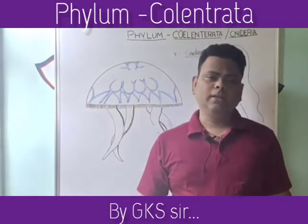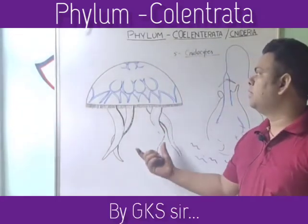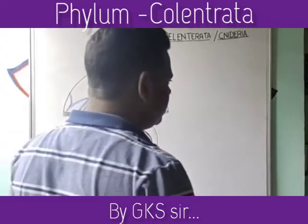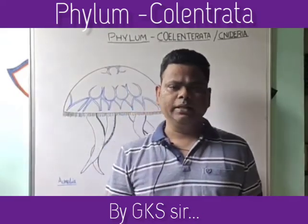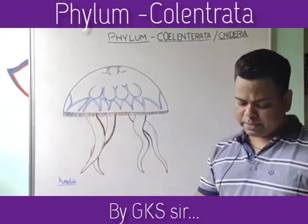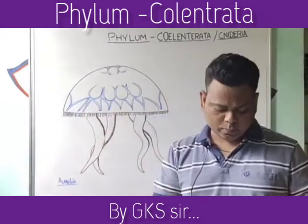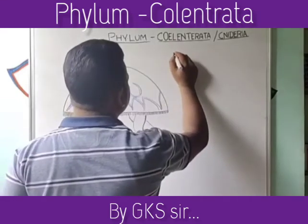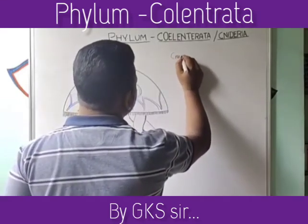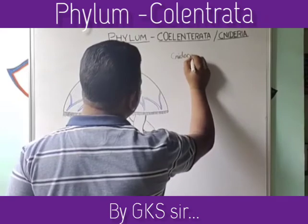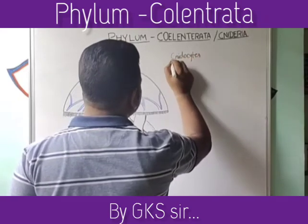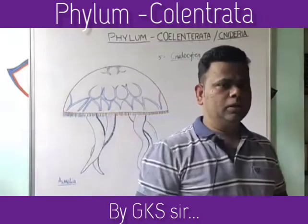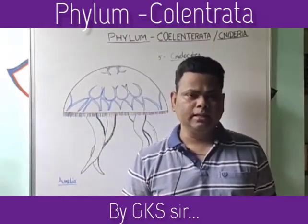Welcome back. In the last class we discussed about Aurelia, which is a jellyfish. Now the next point is nematocysts — these are highly specialized stinging cells.